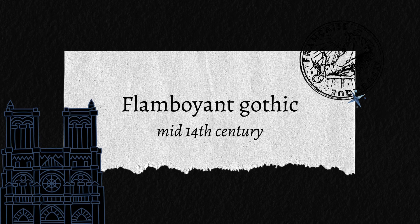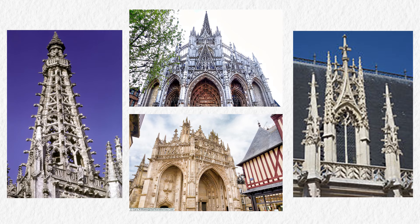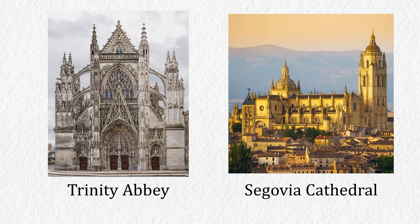After managing height and light, Flamboyant Gothic from the mid-14th century is when they went all out on decorations. Many ornaments from this style have a flame-like appearance, whether on spires, tracery, or porches — hence the name Flamboyant. Apart from France, this style was also popular in Spain. Some examples are Trinity Abbey in France and Segovia Cathedral in Spain.